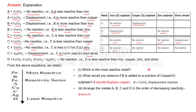When D is added to iron(II) sulfate, copper(II) sulfate, zinc sulfate, or silver nitrate, no reaction occurs — D is less reactive than iron, copper, zinc, and silver. On the basis of this analysis, the decreasing order of reactivity is: B > A > C > D, or more specifically: Zn (B) > Fe (A) > Cu (C) > Ag (D).